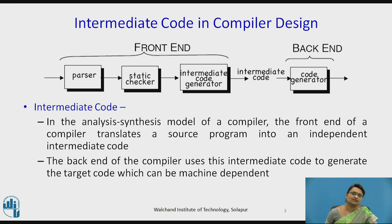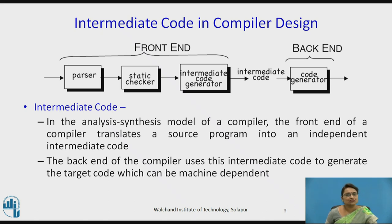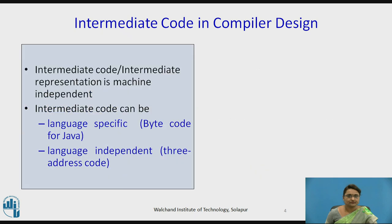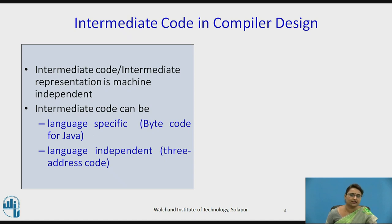In the analysis and synthesis model of a compiler, the front end translates the source program into machine-independent intermediate code. The back end of the compiler uses this intermediate code to generate the target code, which is machine dependent. Intermediate code — also called intermediate representation or intermediate languages — is machine independent, whereas the target code is machine dependent.